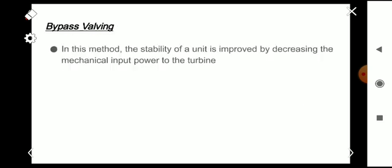Bypass valving technique: In this method, the stability of a unit is improved by decreasing the mechanical input power to the turbine, that is decreasing Pm. With that we can improve the stability.